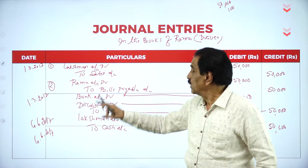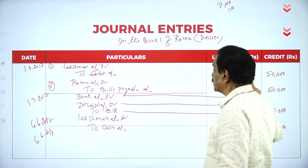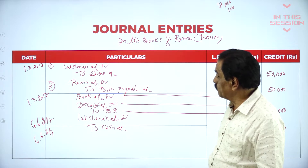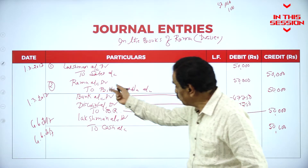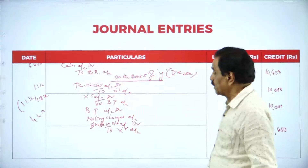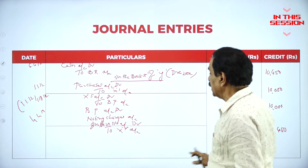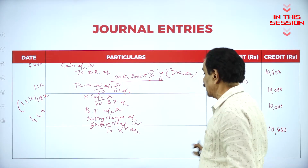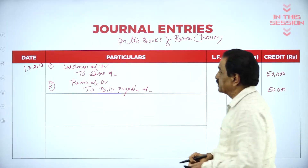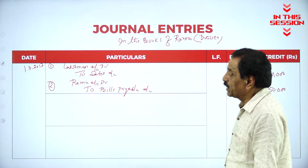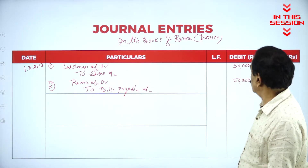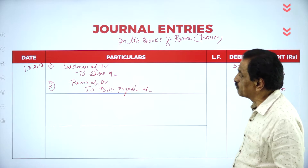For the first entry, Lakshman account debit to sales account — credit sale. He receives the bill: Ramo account debit to BR account. Bill is discounted: bank account debit, discount account debit. BP account debit, noting charges account debit, interest account debit. What is the first entry for sale? Lakshman account debit to sales account. When the bill is accepted: Ramo's account debit to bills payable account.